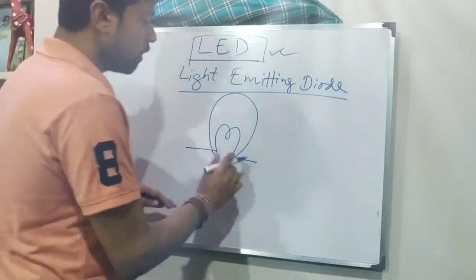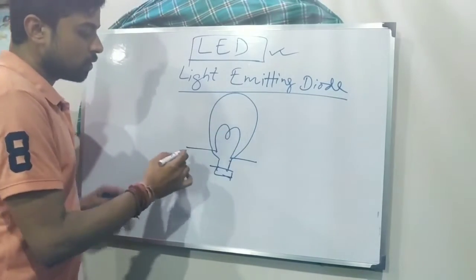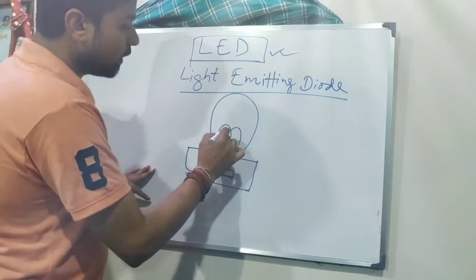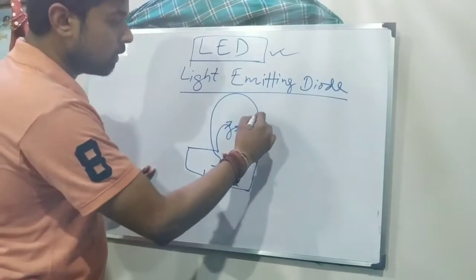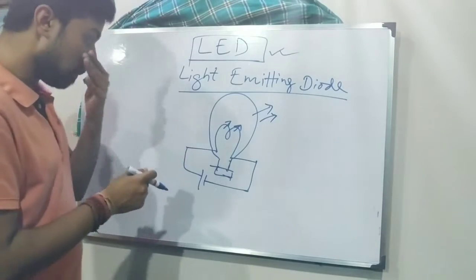So what happens? It is basically a filament or a simple wire which once given the supply, it gets heated up, this filament and it illuminates light. This is how a typical bulb functions. But what happens?